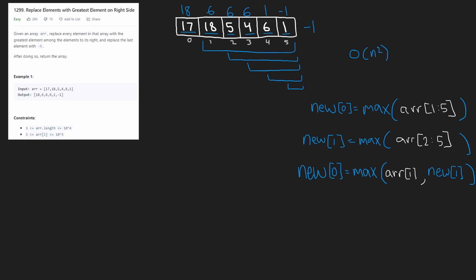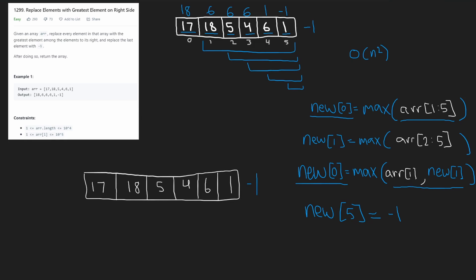The key insight is that these two equations to get the new value in position 0 are equivalent, but in the original approach we compute the maximum of 5 different values, whereas in the new one we only compare 2 values — cutting down all the repeated work. To get the new value in position 0, we first need the new value in position 1, and to get that, we need position 2 first. This leads us to iterate through the array in reverse order.